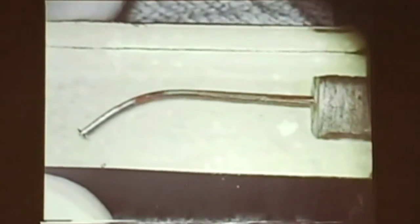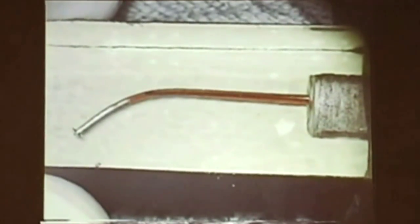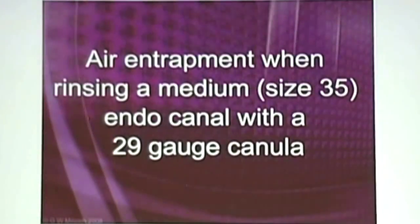In 80% of endo cases, they fail in the apical one-third, not out the lateral. No matter what you do — placing liquid in, extracting it out — we still can't get to that apical area.